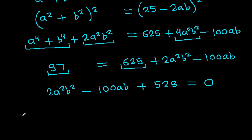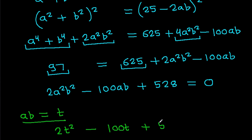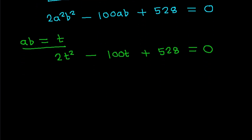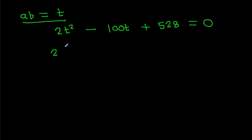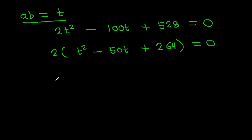Now if we take ab equal to t, then we have 2t squared minus 100t plus 528 equals 0, which simplifies to t squared minus 50t plus 264 equals 0.